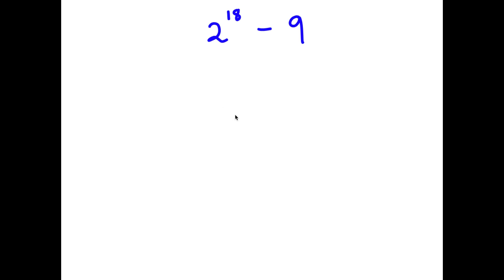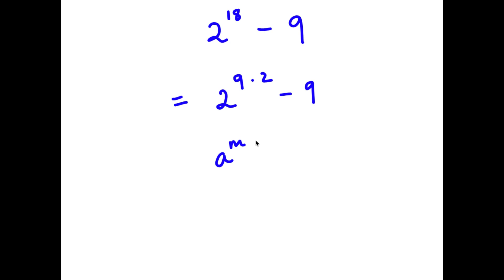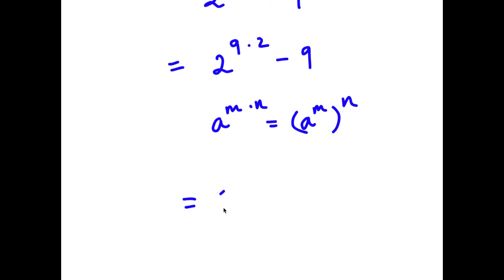In this problem I have 2 to the power of 18 minus 9. To solve this I'm going to start by rewriting 2 to the power of 18 as 2 to the power of 9 times 2. If I have something in the form a to the power of m times n, this is equal to a to the power of m to the power of n. So 2 to the power of 9 times 2 equals 2 to the power of 9 to the power of 2.